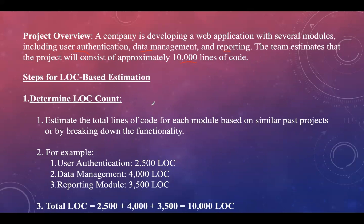We break down the code for each module based on similar past projects or by breaking down the functionality. For user authentication, assume 2,500 LOC; for data management, 4,000 LOC; and for the reporting module, 3,500 LOC. The total comes to approximately 10,000 LOC, estimating that the entire project requires 10,000 lines of code.